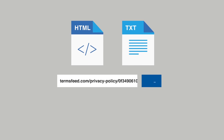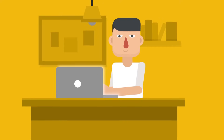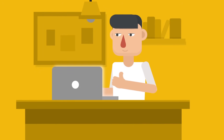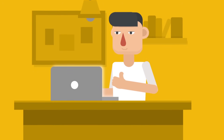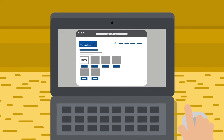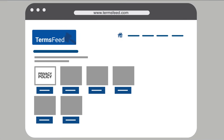You can now download your custom privacy policy as both HTML or text files. TermsFeed also hosts your privacy policy for free, so you can link to your privacy policy from your website and app directly. It's that easy. Go to TermsFeed.com to get started.